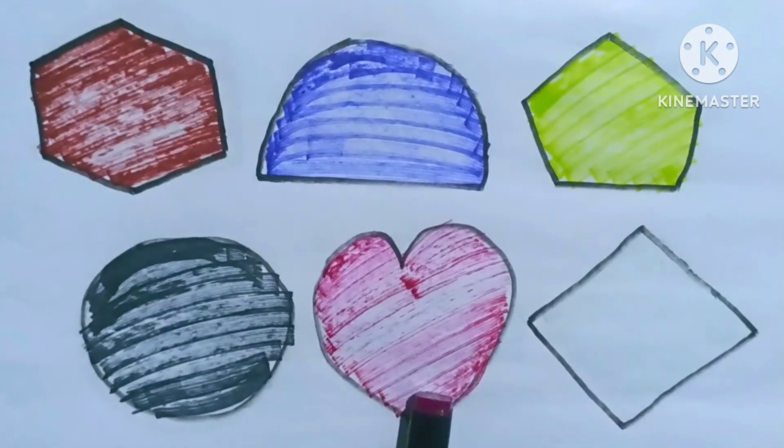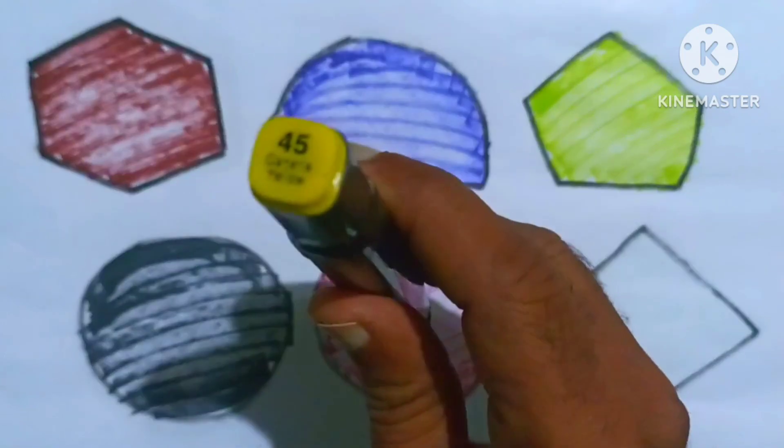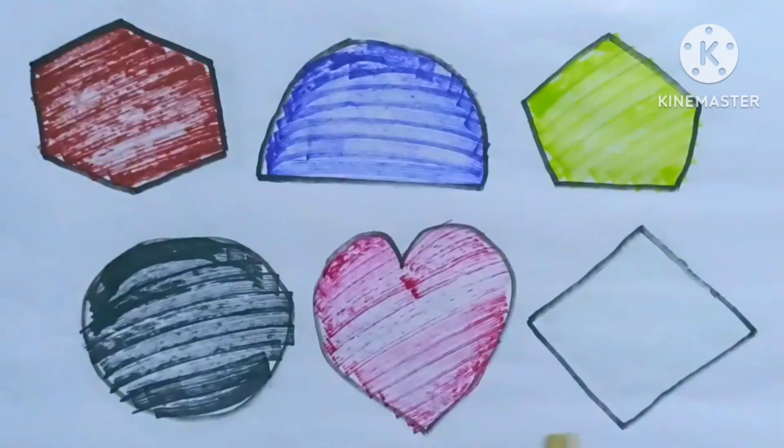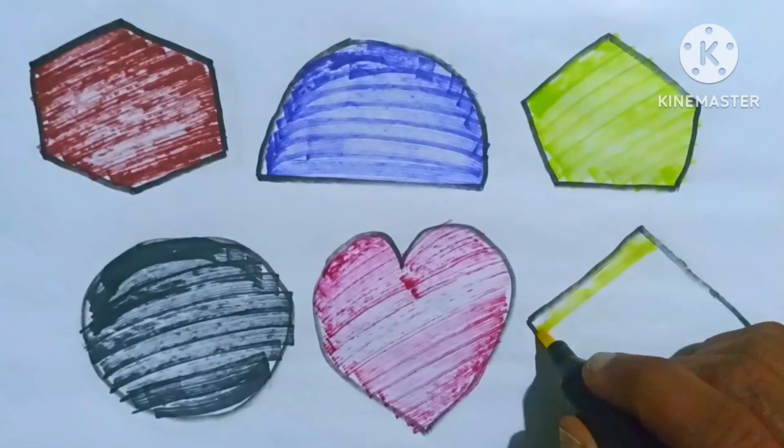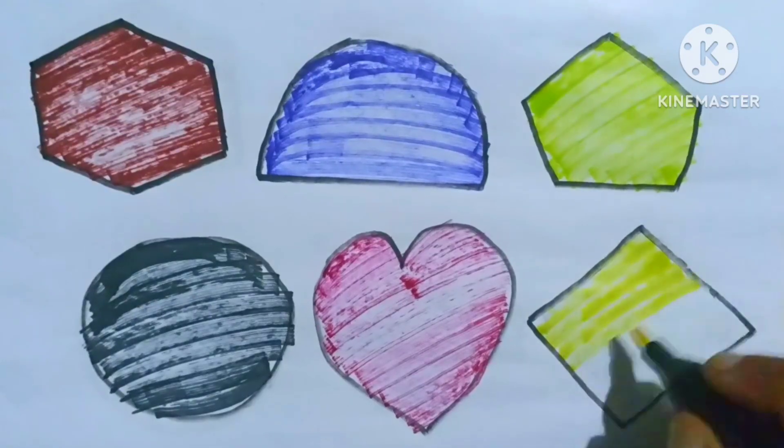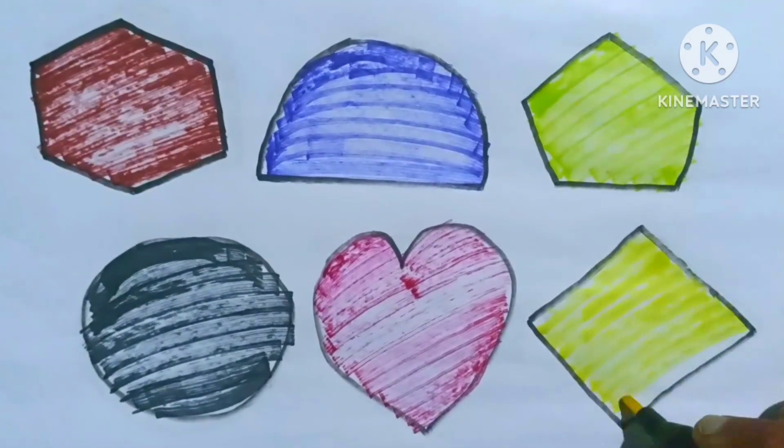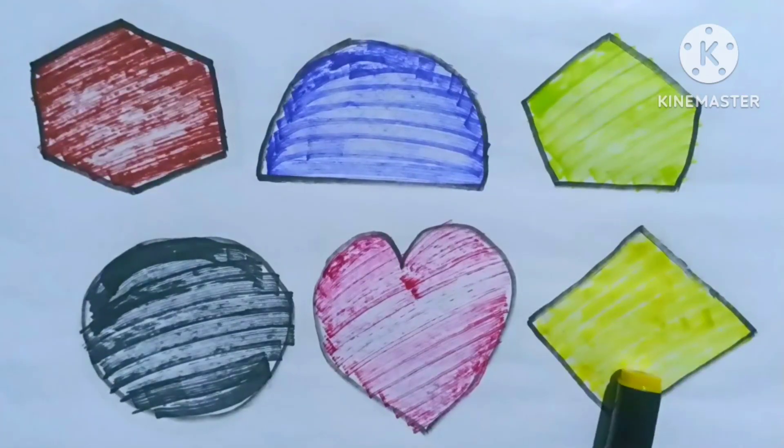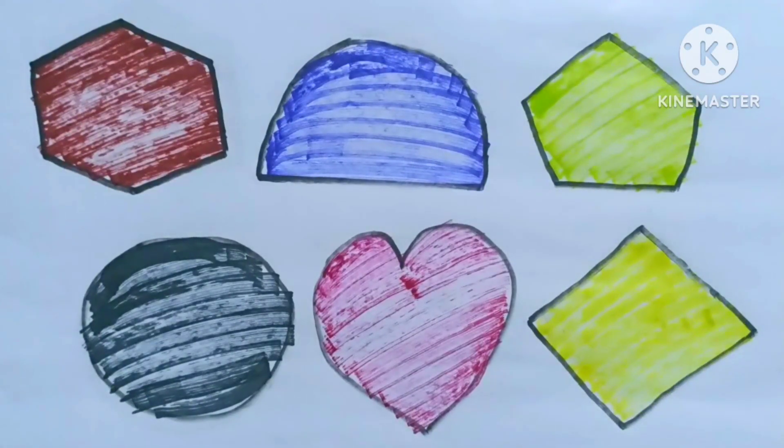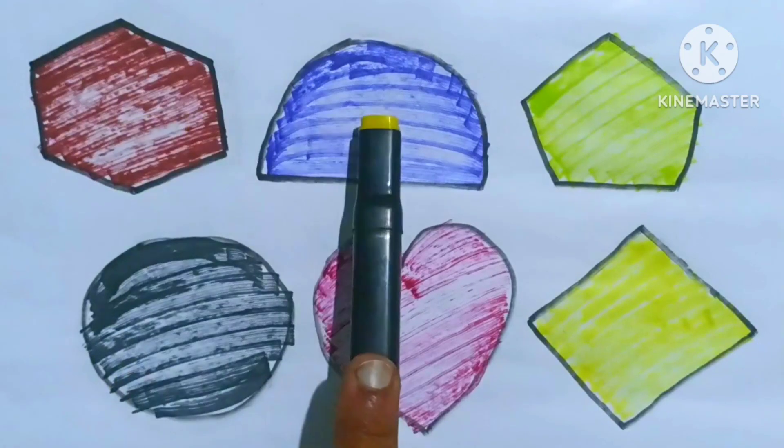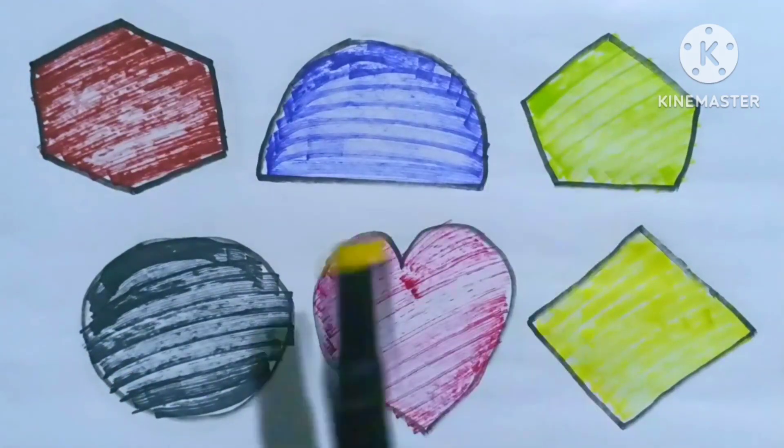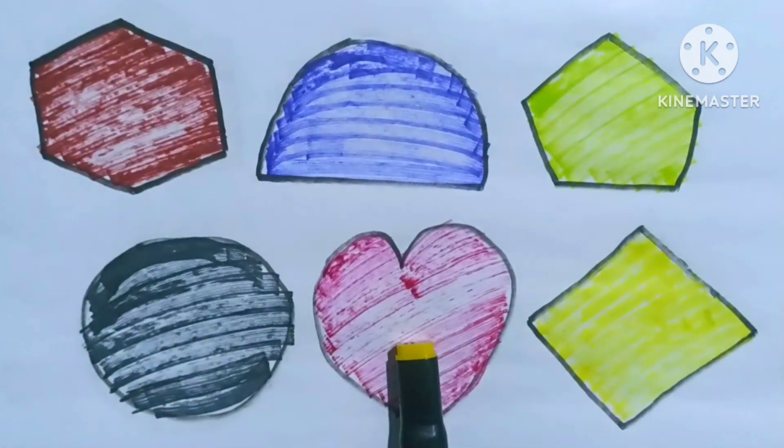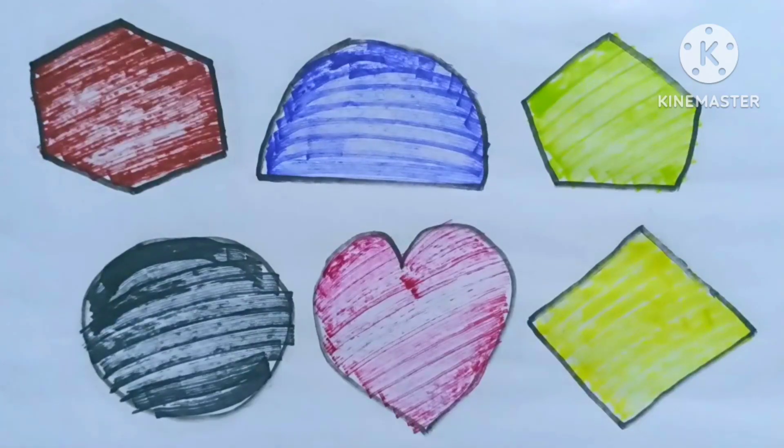Yellow color. Yellow color. Let's learn the shapes: hexagon, semicircle, pentagon, circle, heart, rhombus. Thank you for watching.